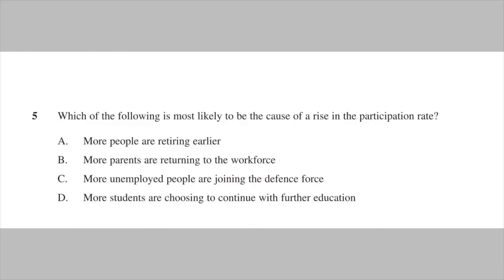Let's also look at 2019's question 5. It's got no calculation, but it tests your understanding of the participation rate formula. Which of these scenarios would cause a rise in the participation rate? Option A: more people are retiring early. This would cause less of the population above 15 to be working or looking for work, therefore lowering the participation rate — A is wrong. Option B: more parents are returning to the workforce. This would mean that people who were previously not working or looking for jobs are now back in the labor force, causing the rate to increase — B is the correct answer.